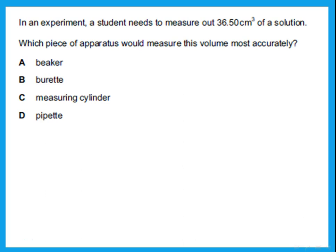Another typical question: 'A student needs to measure out 36.50 cm³' — the decimal point means it is an exact, accurate measurement. Which piece of apparatus would measure this volume most accurately? The burette measures volumes accurately, so the answer is B. Remember: never use a beaker to measure volume. You use a beaker for adding a solution to another solution and doing a reaction, but you never say 'I use the beaker to measure a volume' — it is not an accurate method at all.